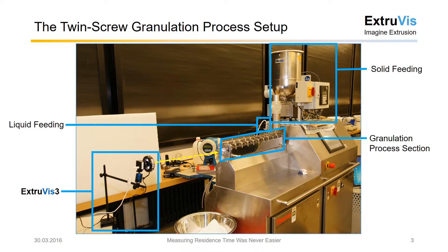The overall setup looks like we see here in this picture. The camera is mounted on the ball head, which is then mounted on the tripod auxiliary, and all of that is mounted on a separate table. It is not mounted to the granulator itself. The reason is that we want both the camera and the granulator mechanically disconnected so that vibrations from the granulator are not transferred to the camera.